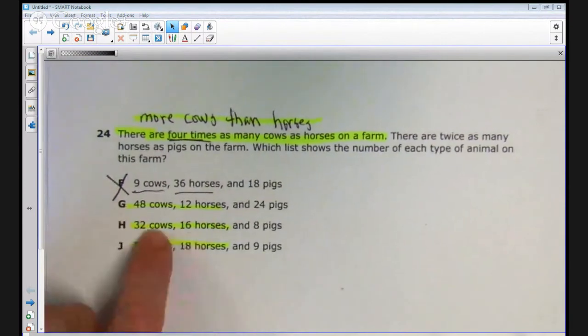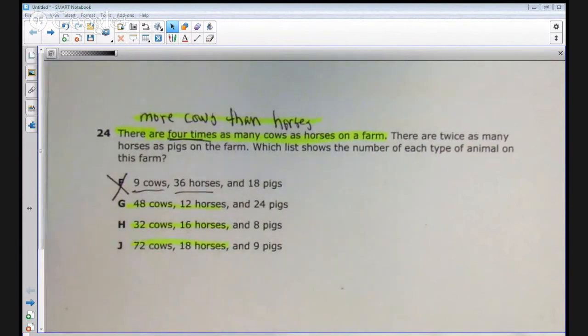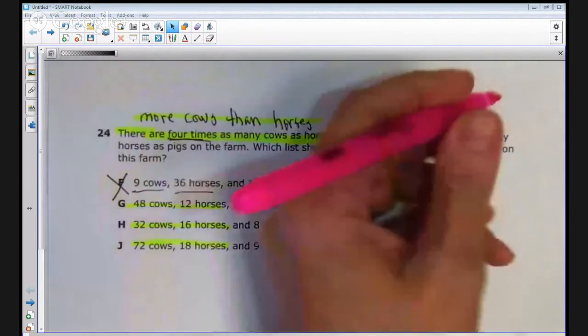H also had not four times as many, but twice as many. But I'm going to leave it there for now and go on to the next statement. It says there's twice as many horses as pigs.